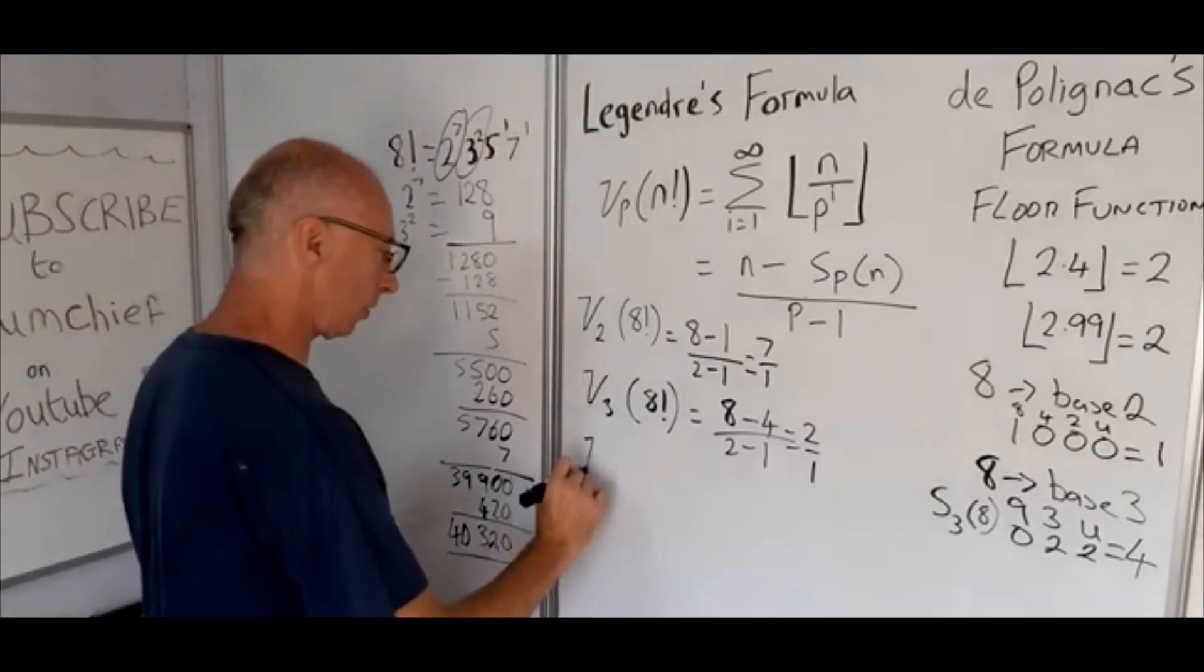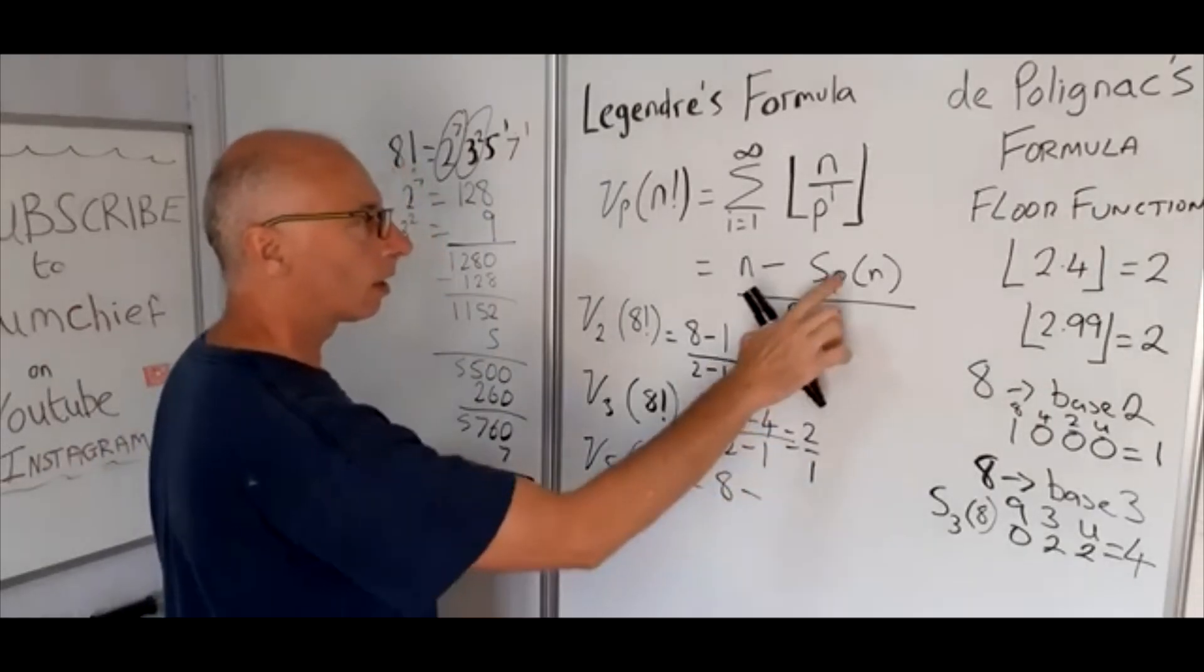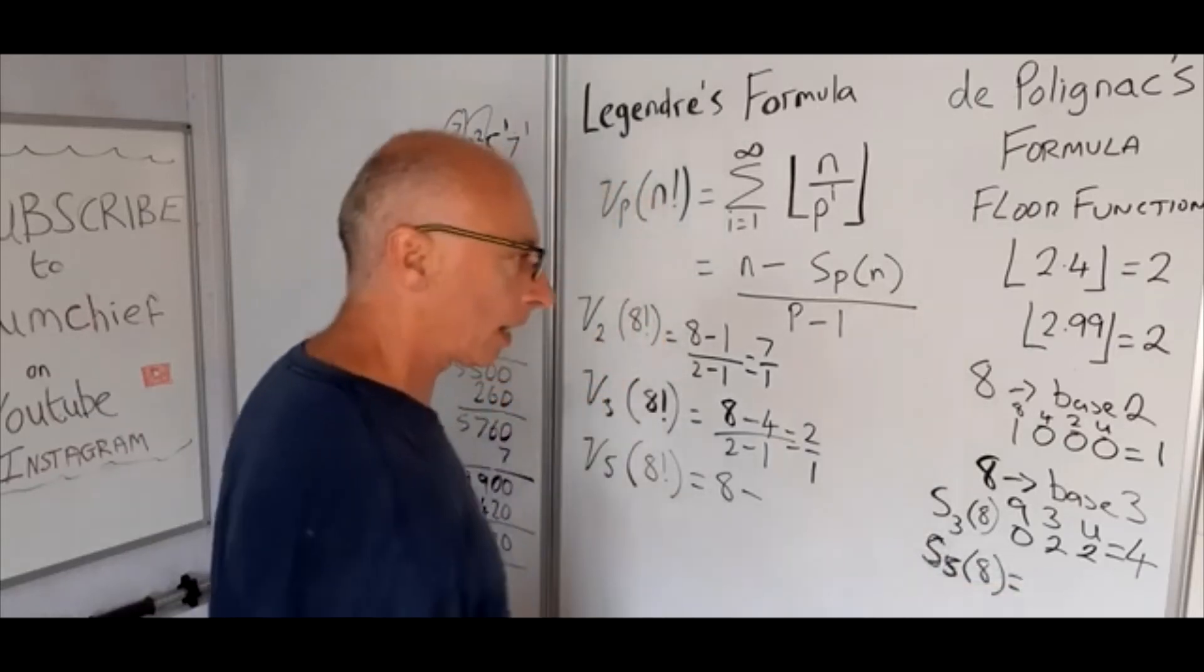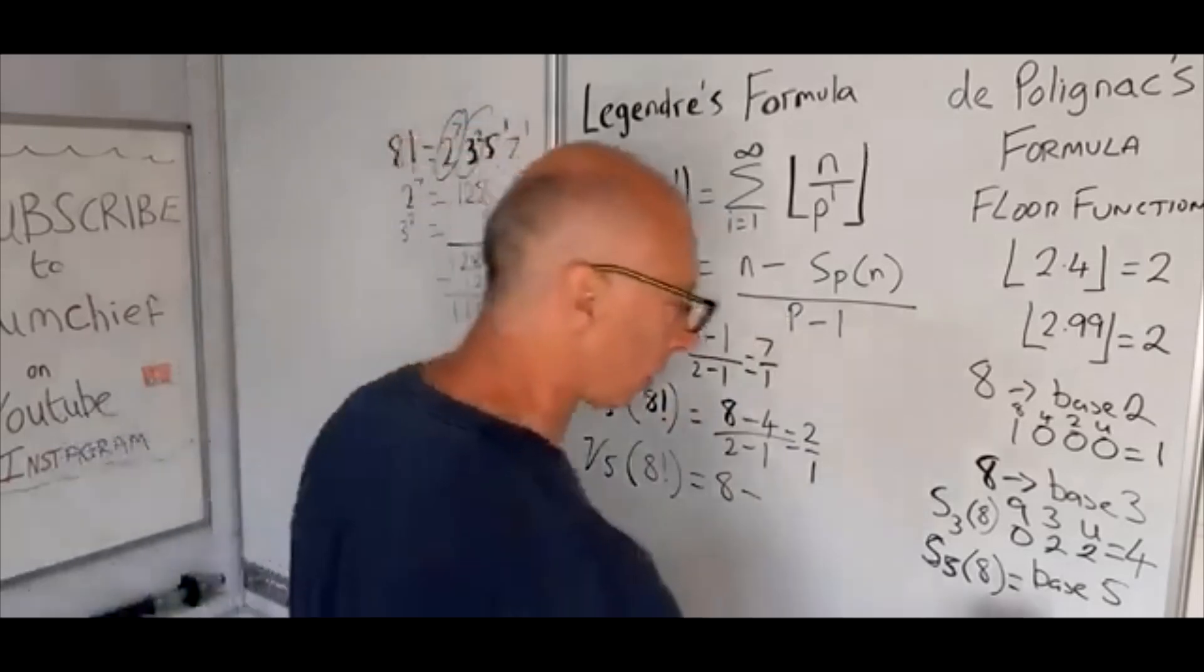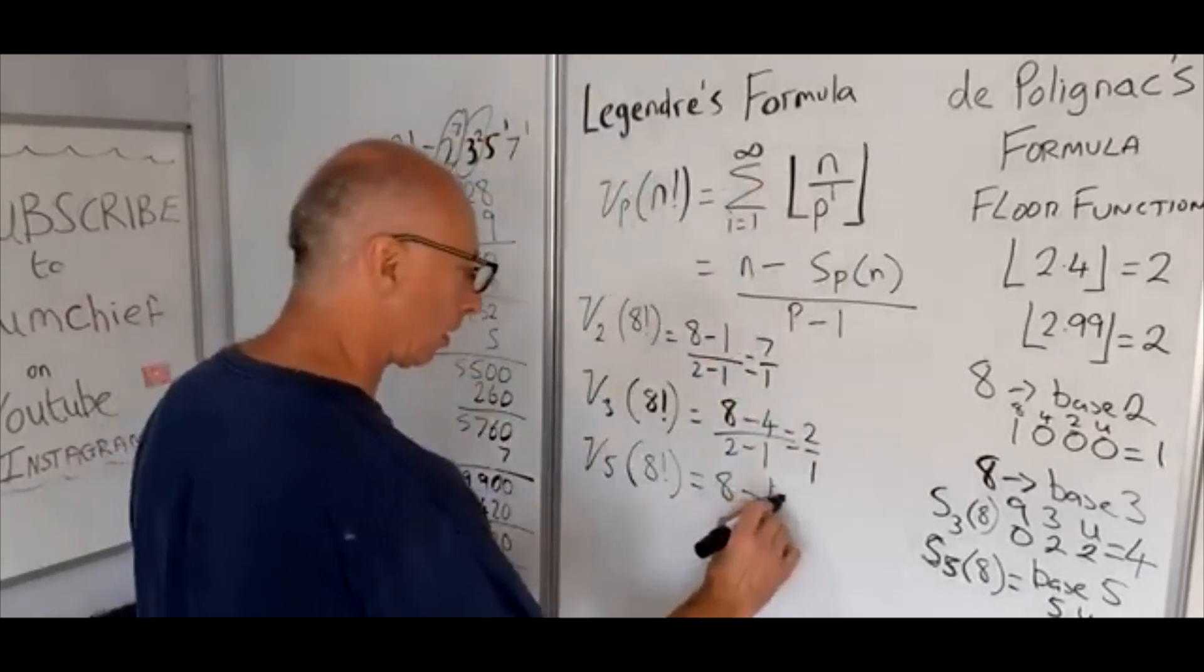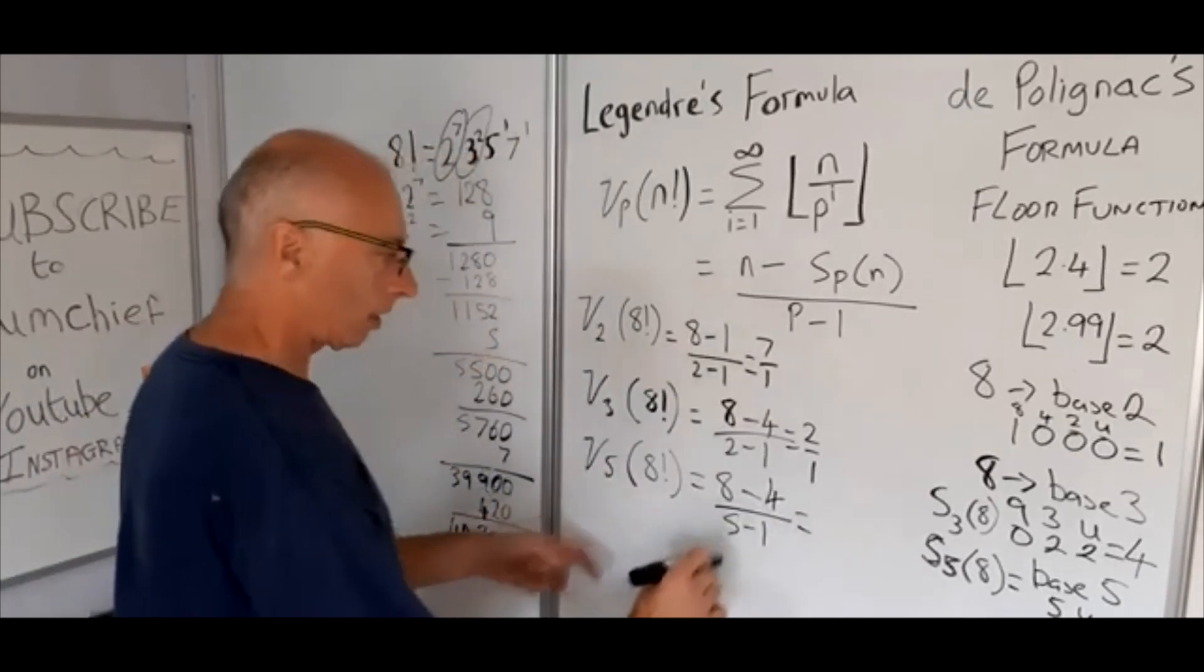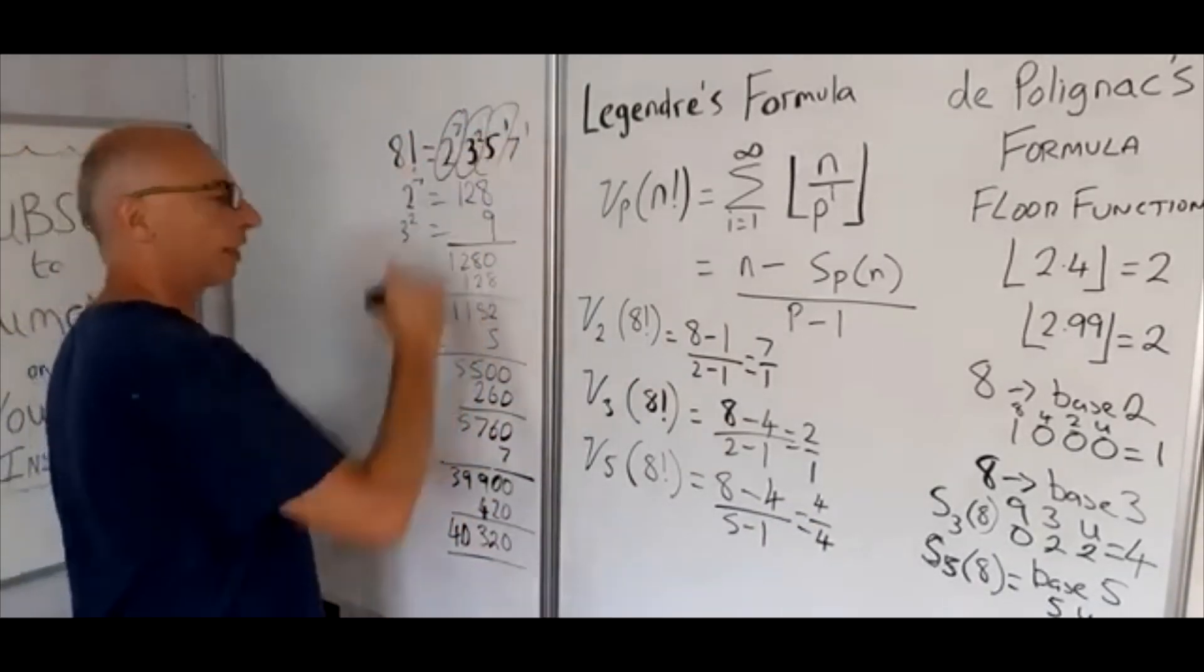Okay, let's try 5 with this formula. The p-adic value of 5 for 8 factorial. So n is 8, s_5 of 8. So base 5. So 8 in base 5 is just going to be 5's and units, so it's 1 five and 3 units. So the total of that is going to be 4. So 8 minus 4, and then again here, our prime number is 5, so that's 5 minus 1. So it gives us 4 over 4, which gives us 1. So that check, that one there, that one works for this formula.